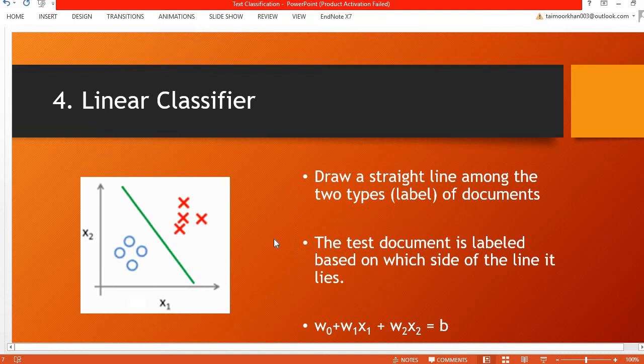In order to decide the label for an unseen document, its x1 and x2 values are put into the formula while w0, w1 and w2 remain the same as acquired from the training data. This decides the value.